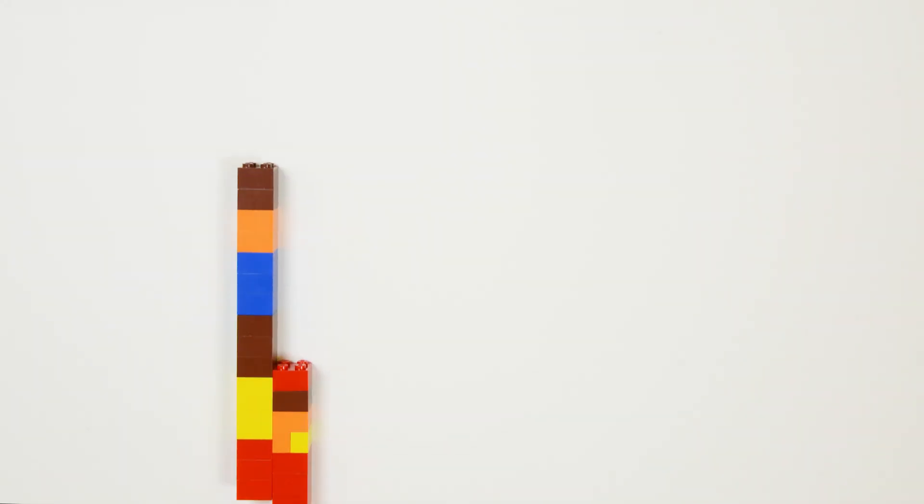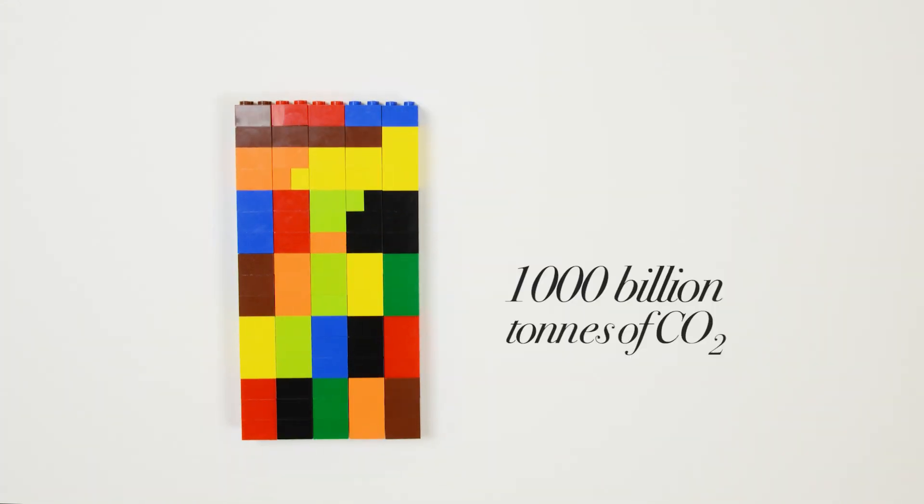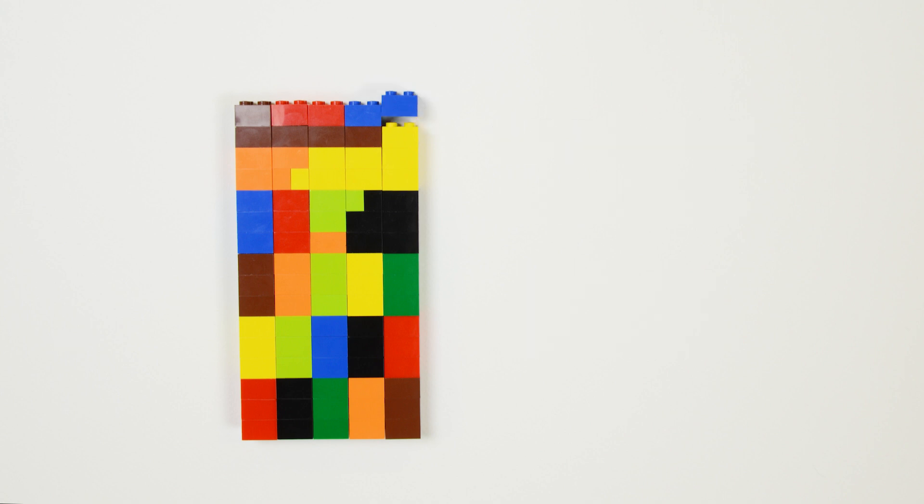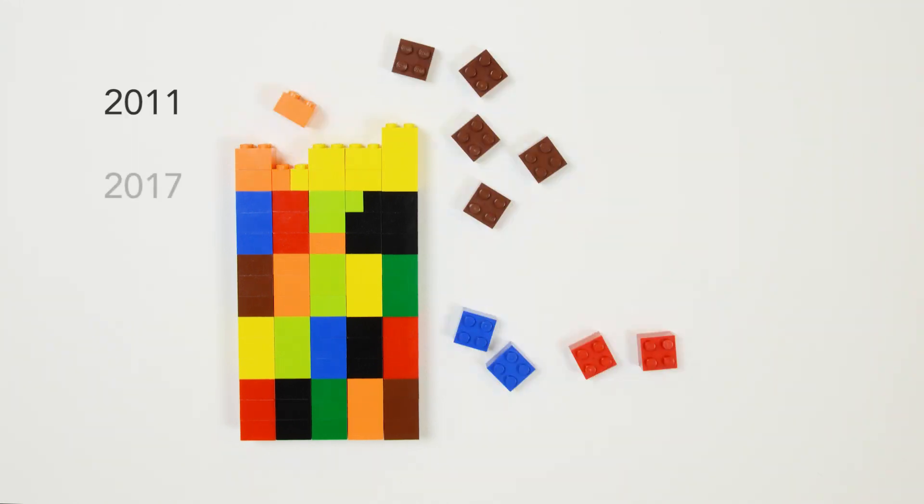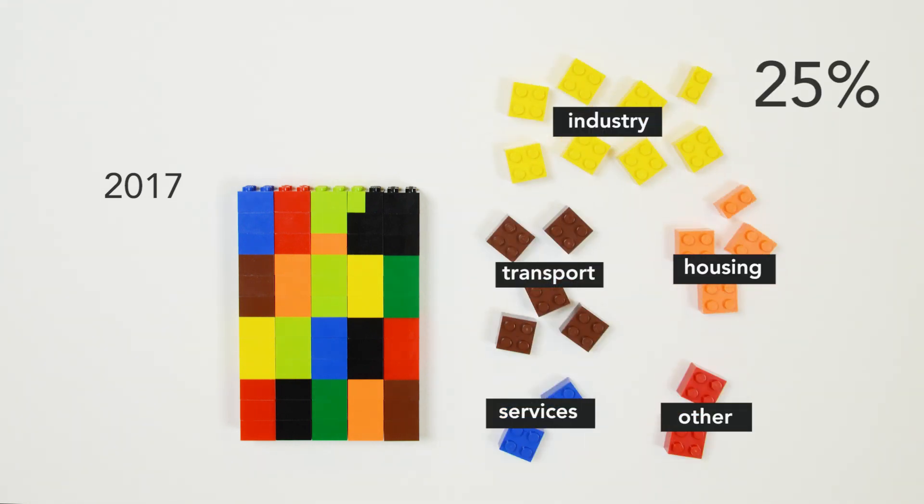If we're going to meet the 2 degrees C commitment, scientists have estimated we can emit at most around 1,000 billion tonnes of carbon dioxide. That is, we have a carbon budget of 1,000 billion tonnes. Say it quickly and it sounds a lot, but that was in 2011 and it's now 2017 and we've emitted around one quarter of that carbon budget.